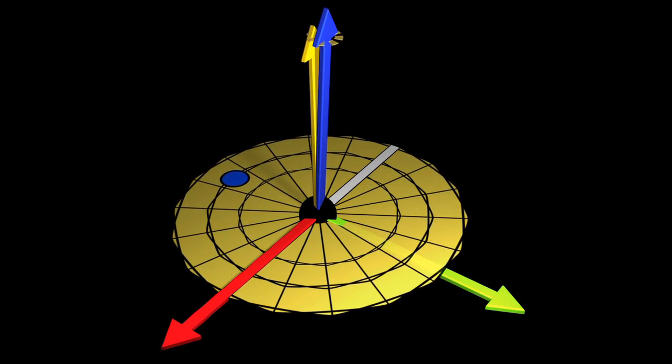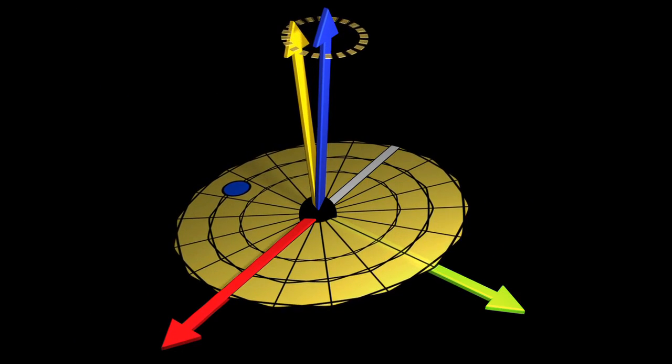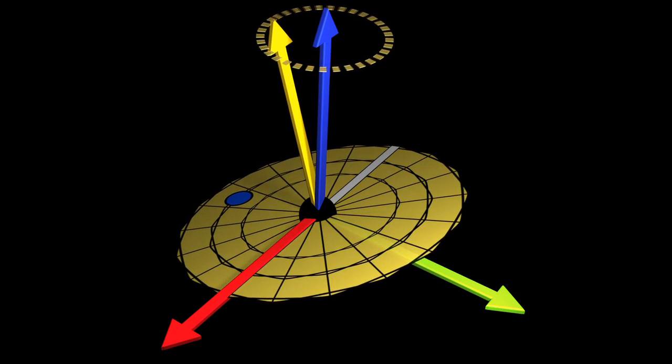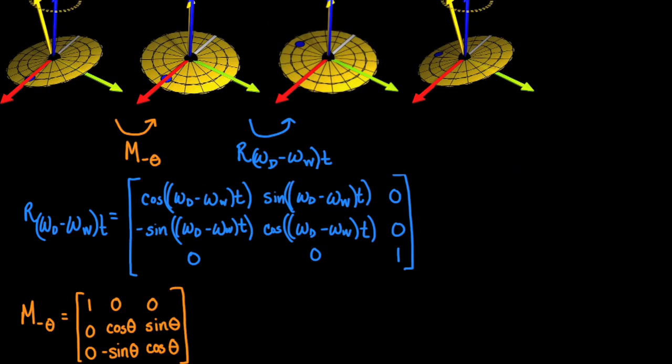Now, we need to make sure that we tilt the disk again so that we can describe the wobble. Since we assume the tilt axis begins along the x-axis, we rotate the disk back to the initial tilted position by theta degrees. This counterclockwise time independent rotation about the x-axis is represented by this matrix.